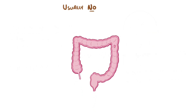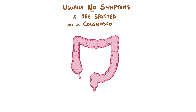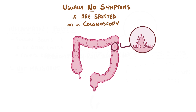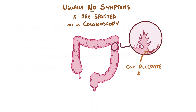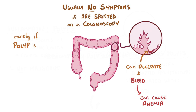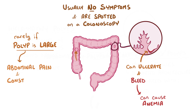Most of the time, polyps don't cause symptoms and are spotted on colonoscopy, which is when a camera looks directly at the colon and rectum. In some cases, a polyp can ulcerate, which causes rectal bleeding. Sometimes that bleeding can be very subtle and go unnoticed, but can result in anemia over time. Rarely, if a polyp is really large, it can cause obstructive symptoms like abdominal pain and constipation.